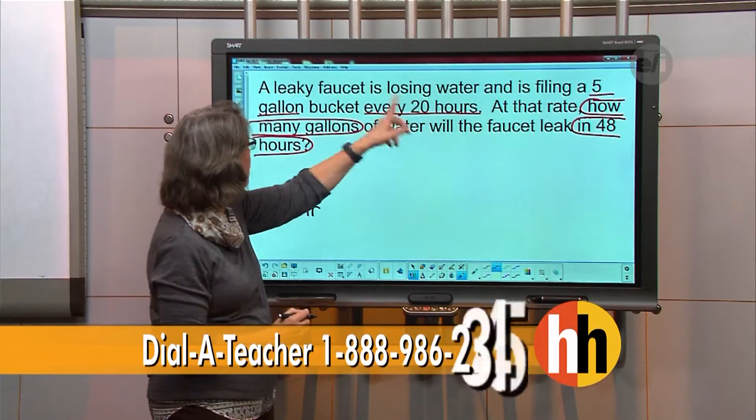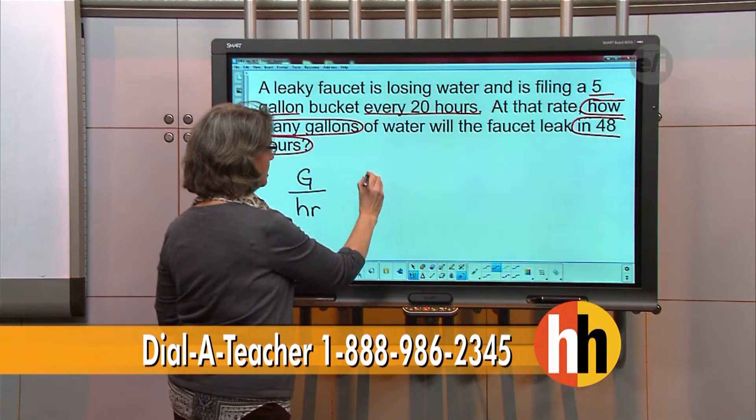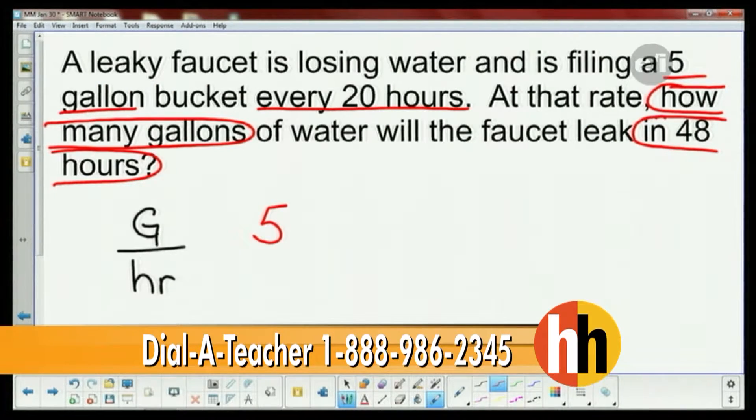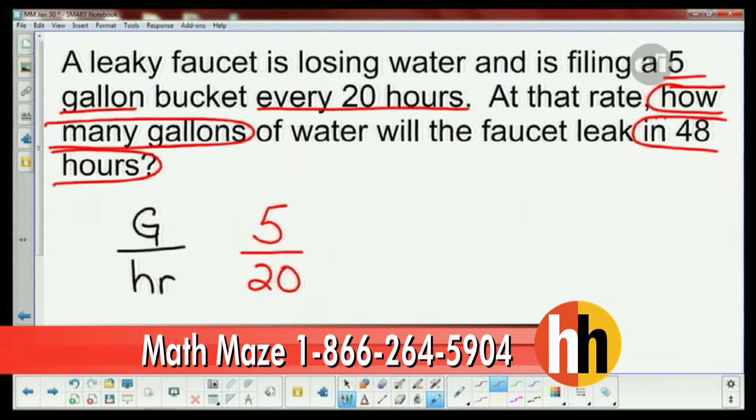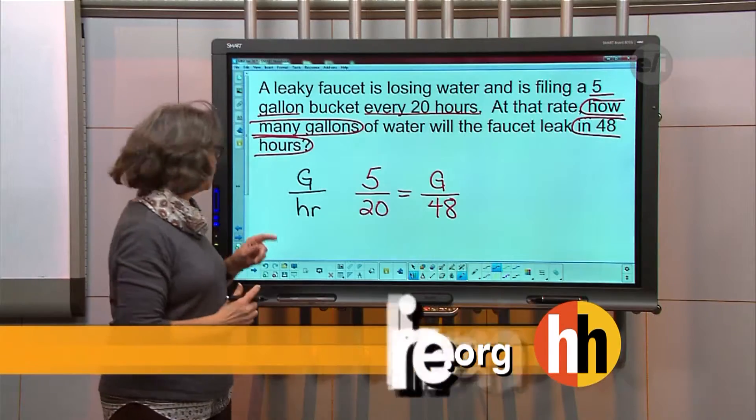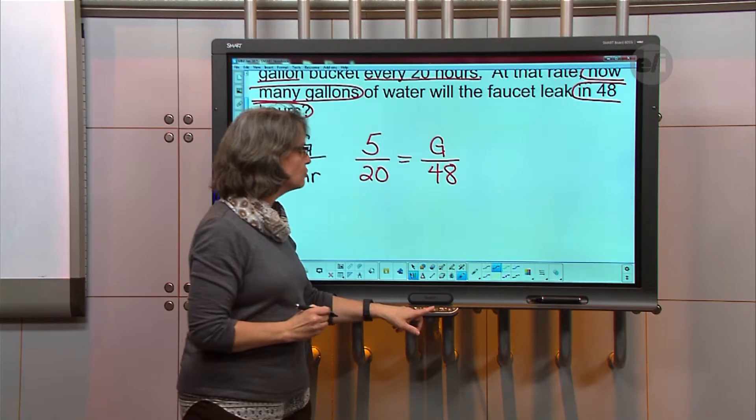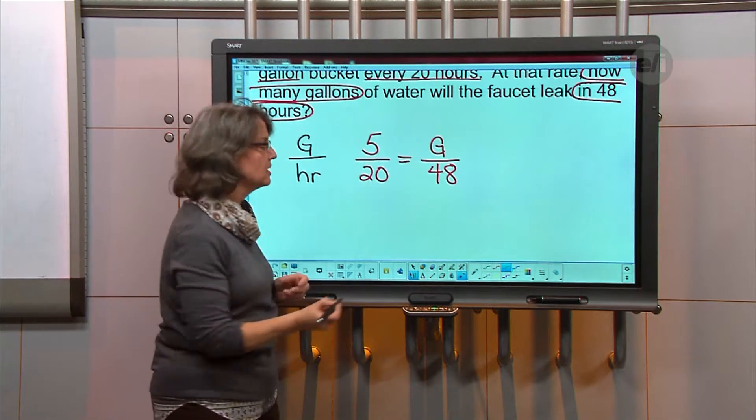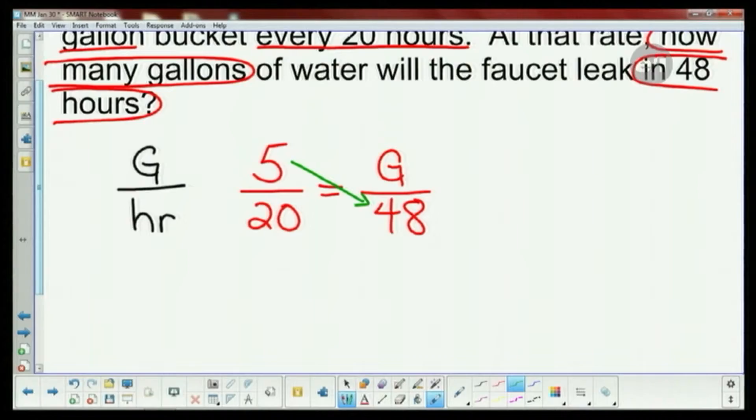Okay, so now I've got my base ratio set up and now we just have to set up our equation. We're going to say we know 5 gallons every 20, so 5 because I put the gallons on the top and the hours on the bottom. So 5 and 20, and then we want to know how many gallons, so we know that our G, our gallons variable, is on top in 48 hours.